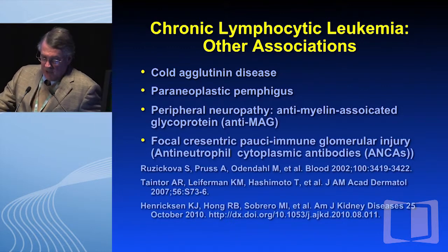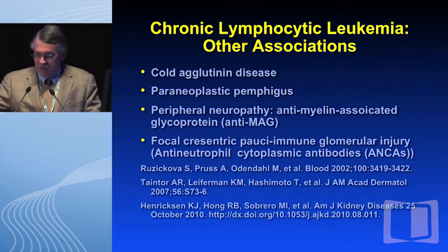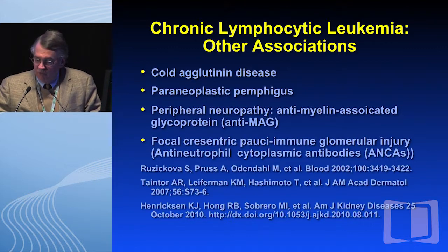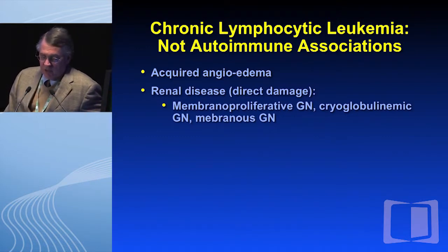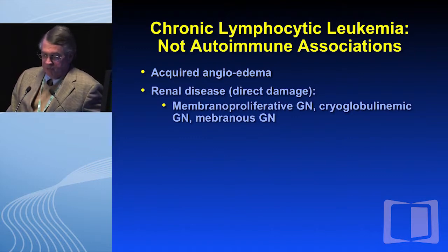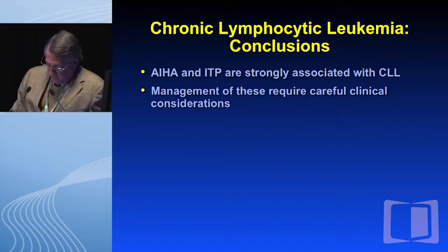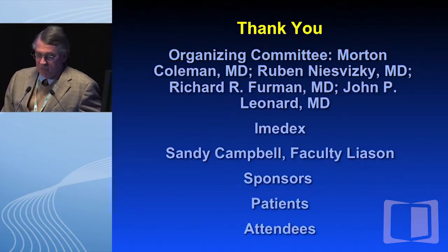Beyond the first two areas, there is reasonable evidence that peripheral neuropathy can be associated with an anti-myelin-associated glycoprotein antibody, and that focal crescentic pauci-immune cellular injury or ANCA has been reported and is likely related. There are no associations with angioedema or renal diseases such as membranoproliferative glomerulonephritis. In conclusion, autoimmune hemolytic anemia and ITP are strongly associated with CLL, and the management of these requires careful clinical considerations. Thank you very much.